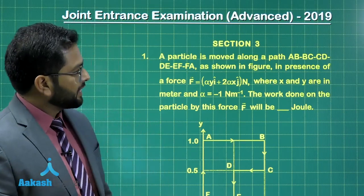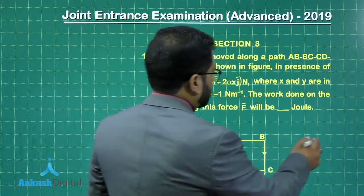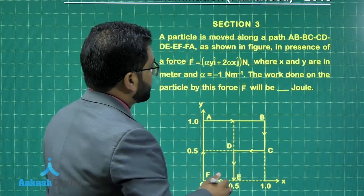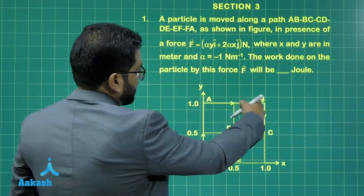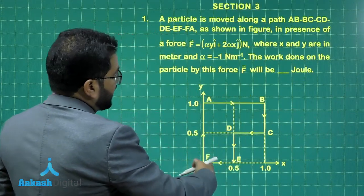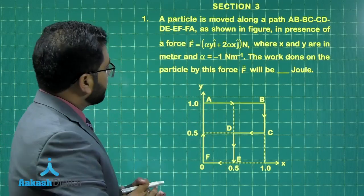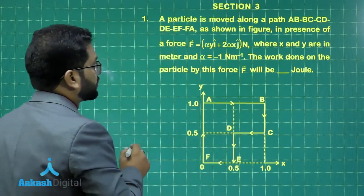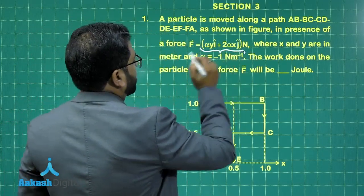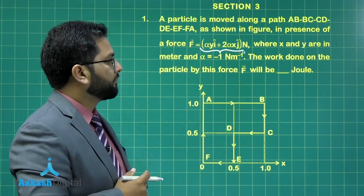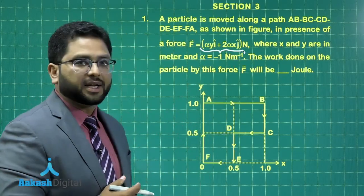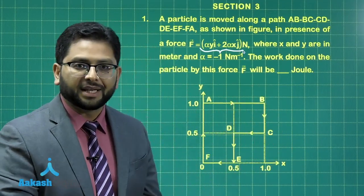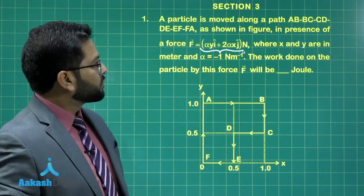The first question is quite an easy one, brought from the topic of calculation of work done. The particle is moved along a path A, B, C, D, E, F in this way. The force doing that work is α·y î + 2α·x ĵ, where x and y are in meters and α is minus one Newton per meter. Let me do the calculation in terms of α and at the end replace α by minus one. We need to calculate the total work done.